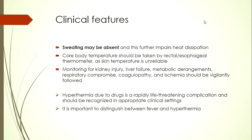Sweating may frequently be absent in heat stroke, because at very high body temperatures the hypothalamic control mechanism fails and the body starts conserving rather than dissipating heat, leading to further rapid temperature rise. Core body temperature should be obtained by rectal or esophageal thermometers since skin and oral temperatures are unreliable. These patients should be monitored for kidney injury, liver failure, metabolic acidosis, electrolyte imbalance, respiratory compromise, coagulopathy, and ischemia, as this condition can lead to multi-organ system failure.